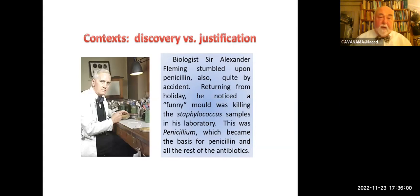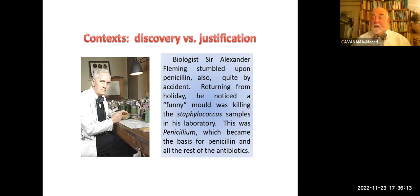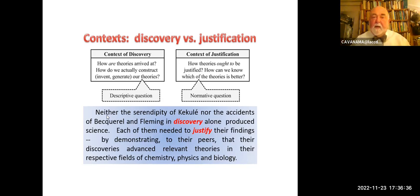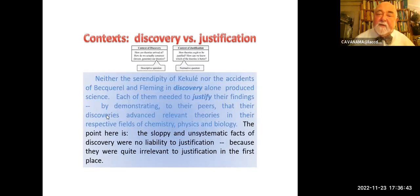And Alexander Fleming discovered penicillin. He noticed there was a funny mold on his samples in the laboratory — this was the penicillin mold, which became the first antibiotic. It saved countless lives, and we have done that very important discovery. But again, completely by accident. Neither the serendipity of Kekulé nor the accident of Becquerel or Fleming in discovery alone reduces to science — they needed to justify their findings by demonstrating to their peers that the discovery advanced relevant theories in their respective fields. The point here is this: sloppy and non-systematic facts everywhere have no liability to justification.